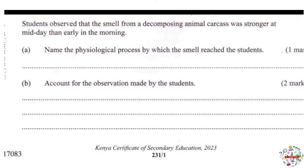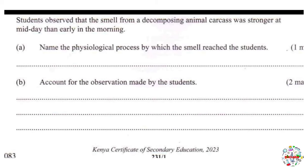Moving on to the next question. Students observed that the smell from a decomposing animal carcass was stronger at midday than early in the morning. Part A: name the physiological process by which the smell reached the students. Whenever a question asks you to identify the physiological process, remember there are only three possibilities: diffusion, osmosis, or active transport.